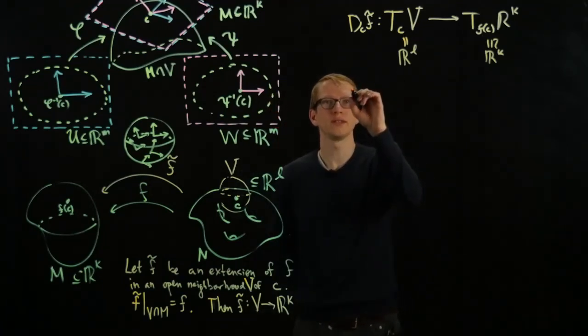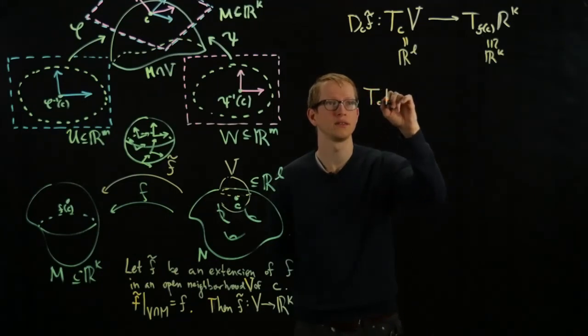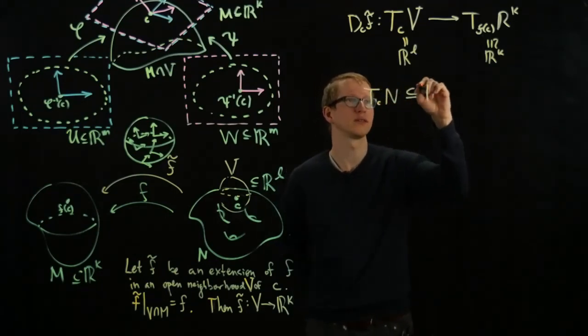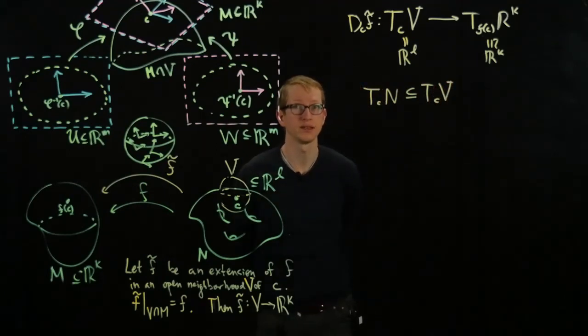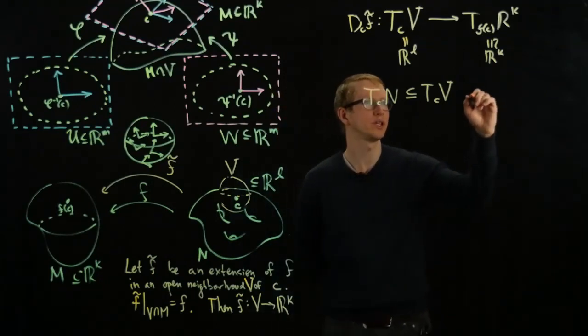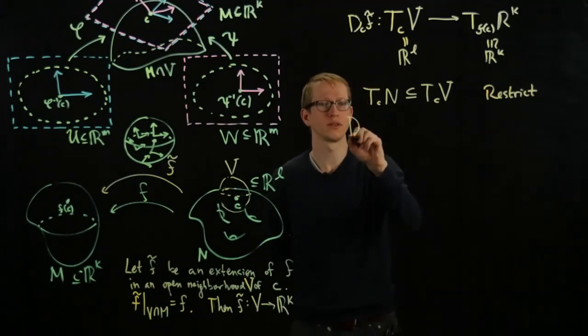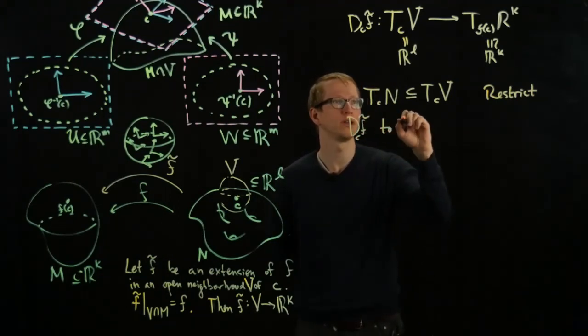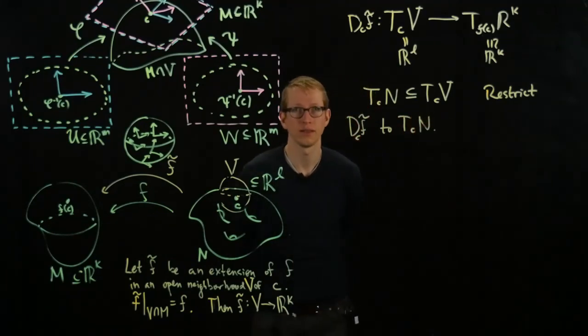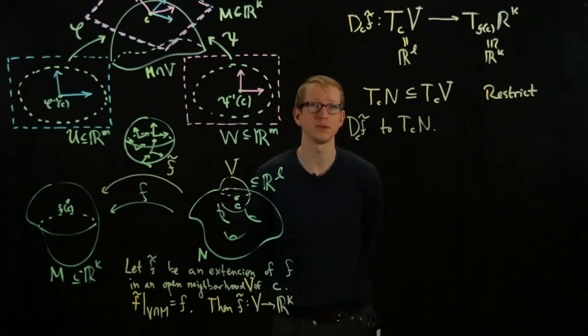Now, what we have is that the tangent space of the manifold N is a subspace of the tangent space of V at the point C. And so we can restrict this differential at the point C to T_C N. It makes sense to take a linear transformation on some vector space and just look at that linear transformation on a subspace.